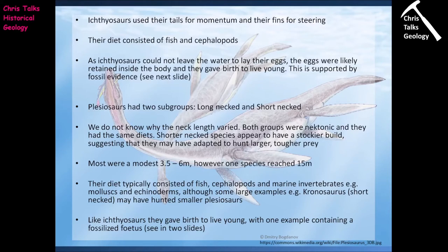Some plesiosaurs were large enough — a great example is the plesiosaur Kronosaurus — that they may have been capable of hunting smaller plesiosaurs. The size and design of the animal would suggest they were designed for hunting other plesiosaurs, and the stomach contents of these larger plesiosaurs like Kronosaurus would suggest that they were hunting smaller plesiosaurs. Like the ichthyosaurs, the plesiosaurs gave birth to live young, with one example containing a fossilized fetus.